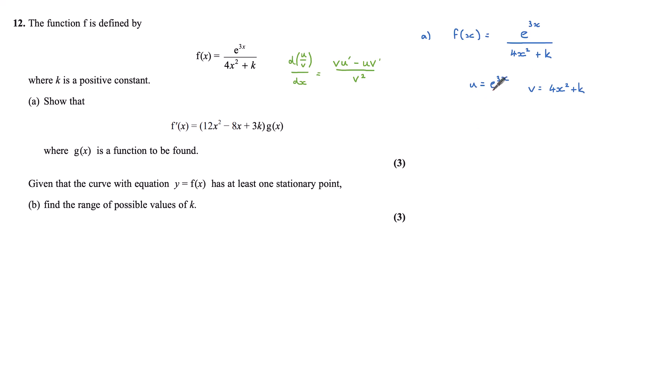Differentiating an exponential, the power remains the same, but I do need to multiply by the derivative of that power, so that is 3e^(3x). And again, I'm using u' to denote du by dx. Differentiating v, 4x² differentiates to 8x, and k, being a constant, differentiates to zero.